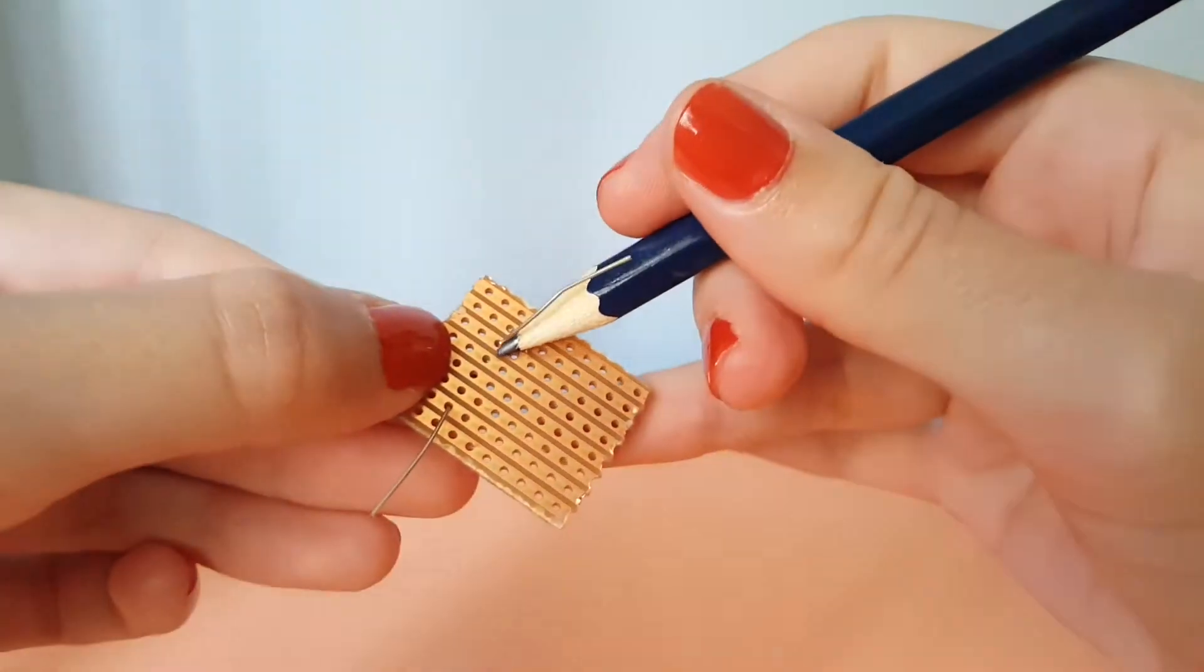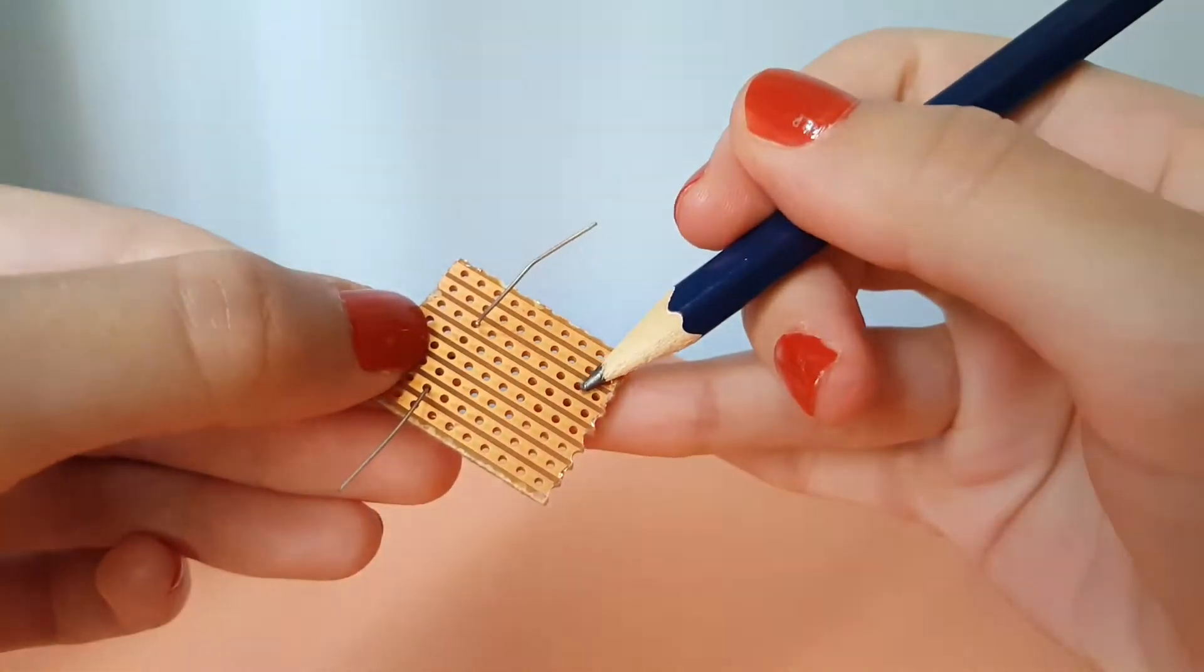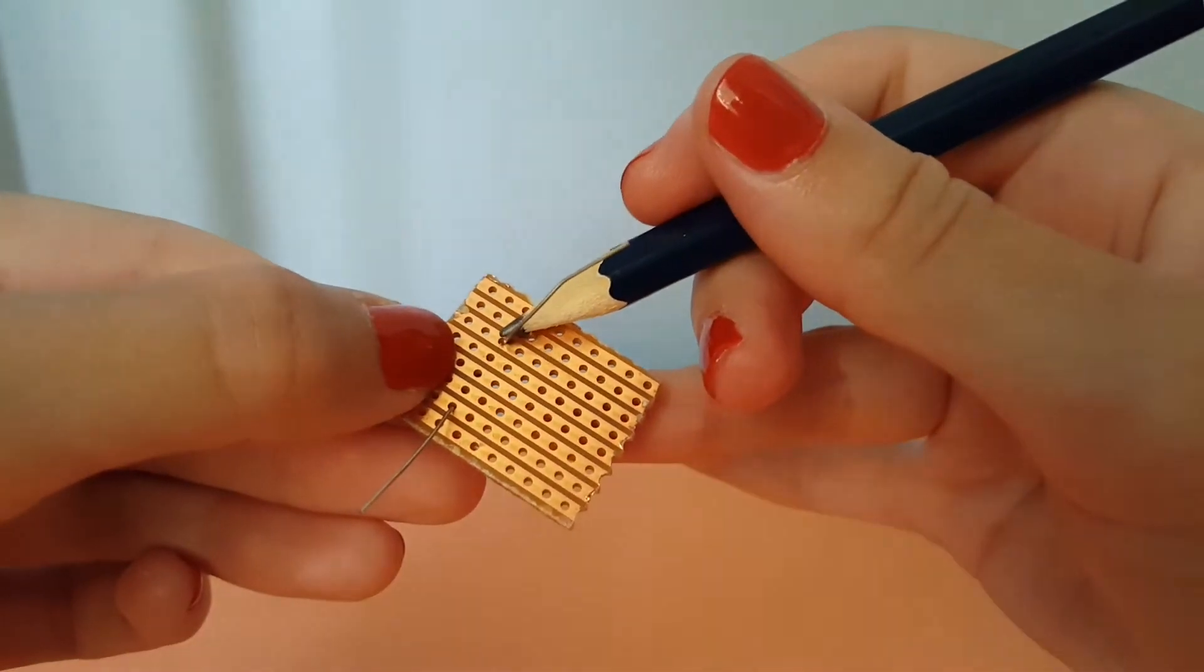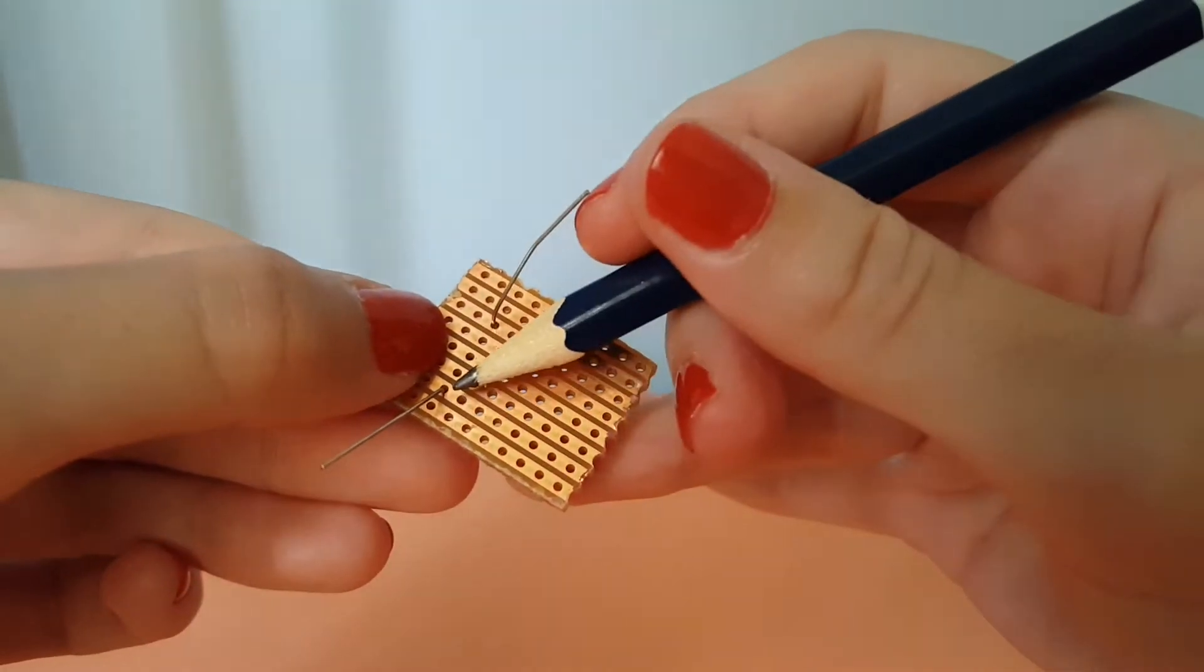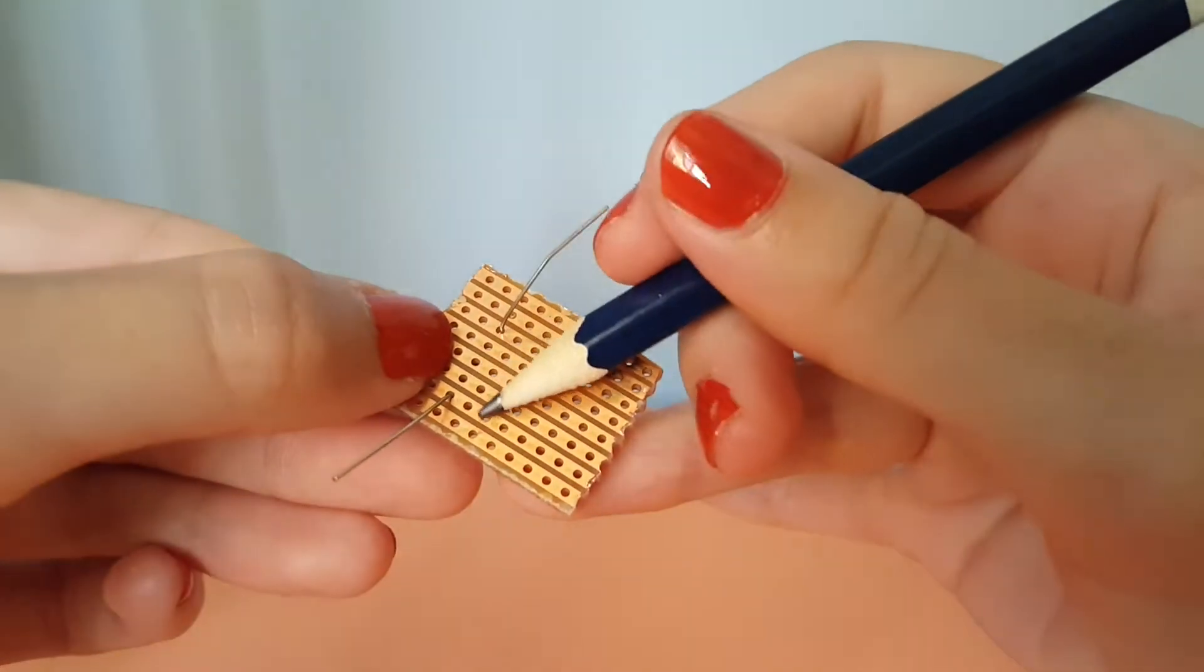Now whatever other component you connect to this row is going to be connected to this lead of the resistor. Whatever component you connect to this row is going to connect to that lead of the resistor.